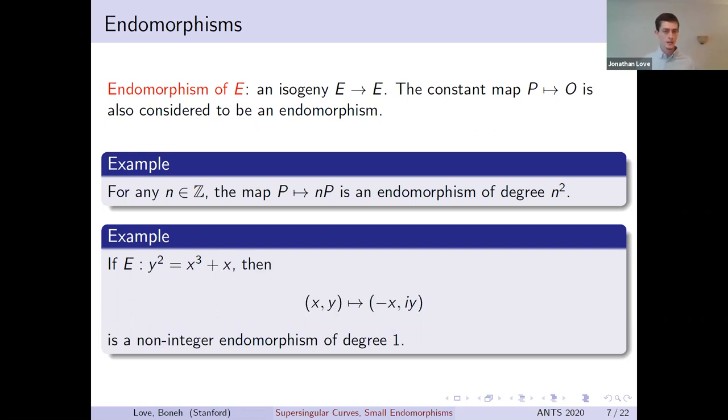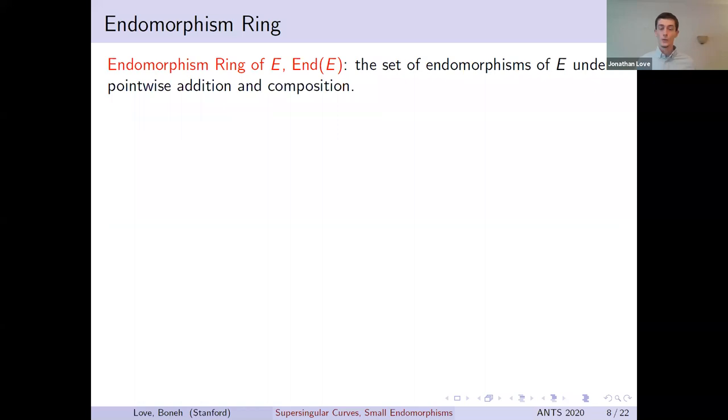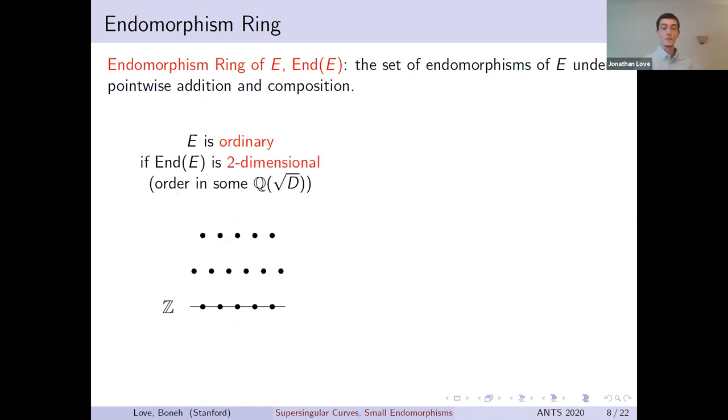Now, if we consider the set of all endomorphisms, we can add them point-wise, and we can compose them with each other. This gives the set the structure of a ring. The endomorphism ring of an elliptic curve over a finite field can fall into one of two categories. On the one hand, the endomorphism ring may be a two-dimensional lattice, specifically an order in an imaginary quadratic field. In this case, we call the elliptic curve ordinary.